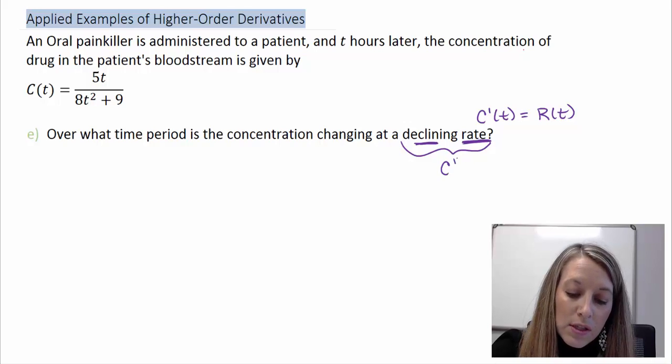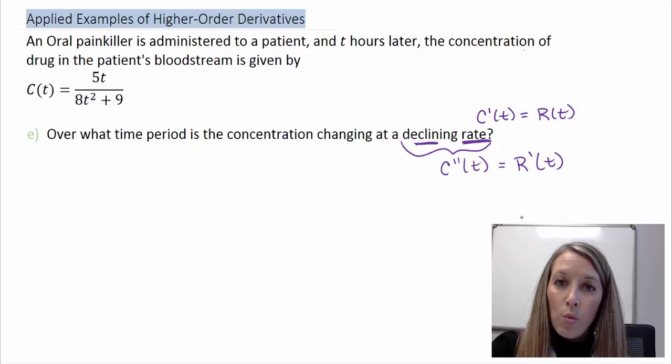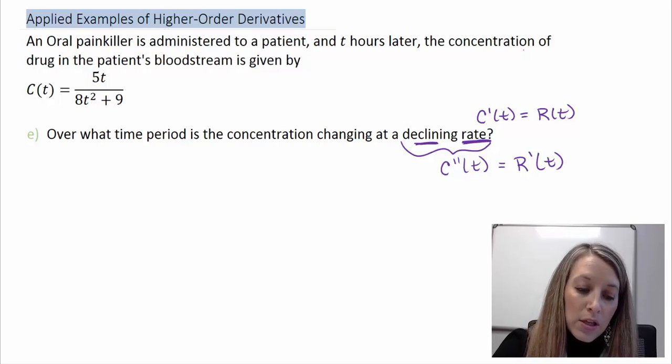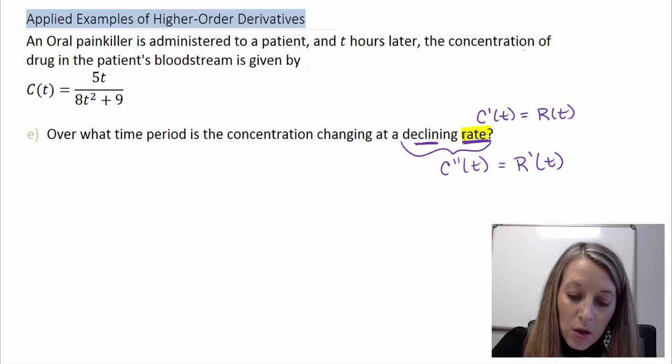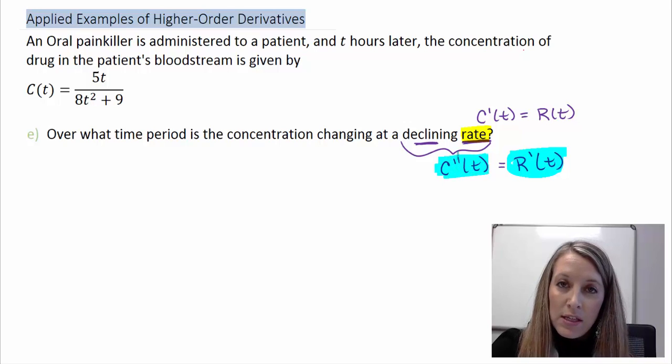So we're going to have to use the second derivative of our original equation, or we're going to have to do the derivative of our rate equation. So one more time, if you ever want to figure out if one function is increasing or decreasing, then you use the next derivative. If I want to know when my rate is increasing or decreasing, then I use my next derivative, R prime of t, which so happens to be the second derivative in this equation.